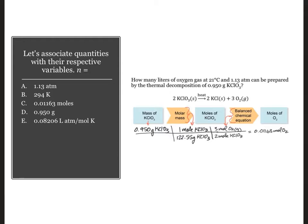This particular question, we were at the end of identifying the quantities with their respective variables, and we were down to number of moles. Number of moles is going to require us to take the grams of our starting compound, use the molar mass, and the mole ratio from the balanced chemical equation, 2 moles of potassium chlorate will yield 3 moles of oxygen to get the correct answer, 0.01163 moles.